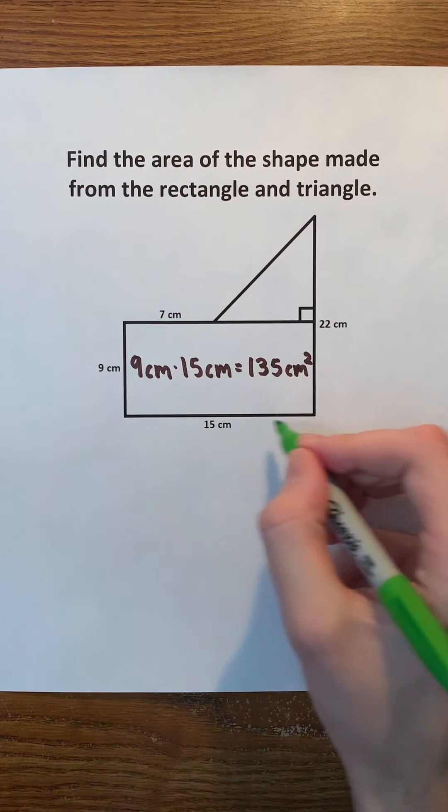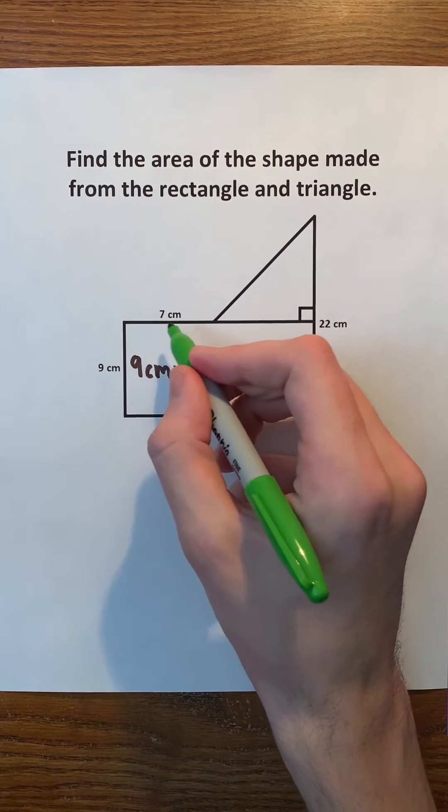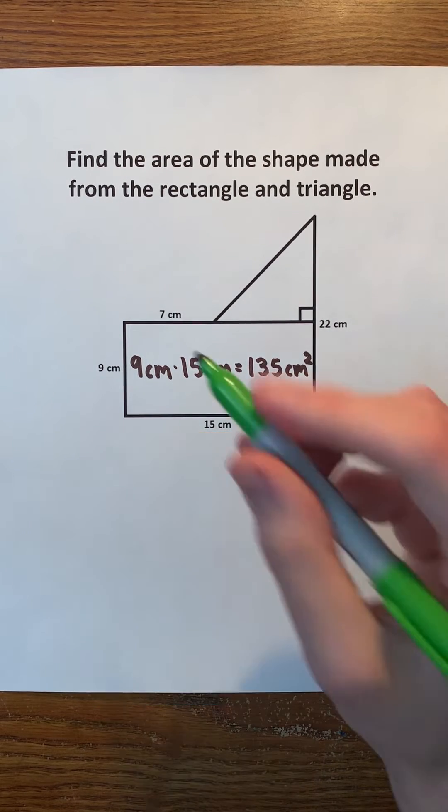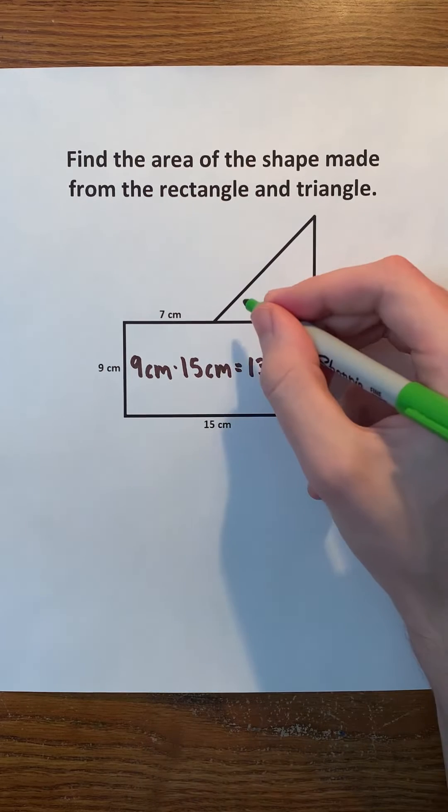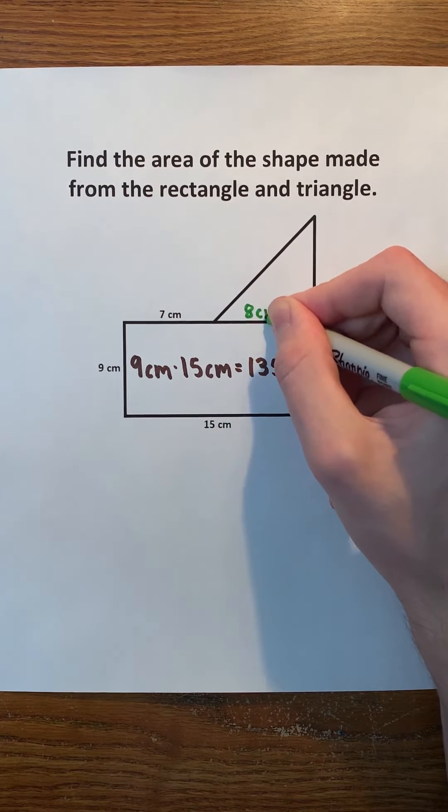Notice that this side of the rectangle has a length of 15 centimeters and this length right here is 7 centimeters. Remember that opposite sides in the rectangle have the same length. So, we can subtract 7 from 15 to see that this length, which is the base of the triangle, is 8 centimeters.